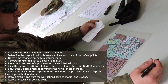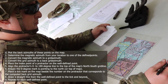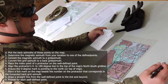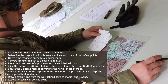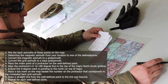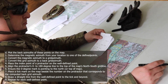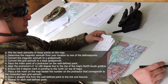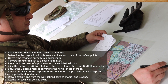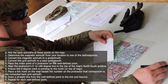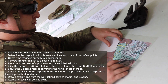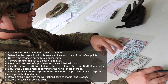Determine the magnetic azimuth from your location to one of the defined points. You will convert the magnetic azimuth to grid azimuth. You will then place the index point of a protractor on the well-defined point. Align the protractor's 0 to 180 degree line to the top of the map's north-to-south grid line. Ensure the 0 degree mark is pointing to the north or top of the map. Place a tick mark on the map beside the number on the protractor that corresponds to the computed back grid azimuth. You will then draw a straight line from the well-defined point to the tick mark and beyond.